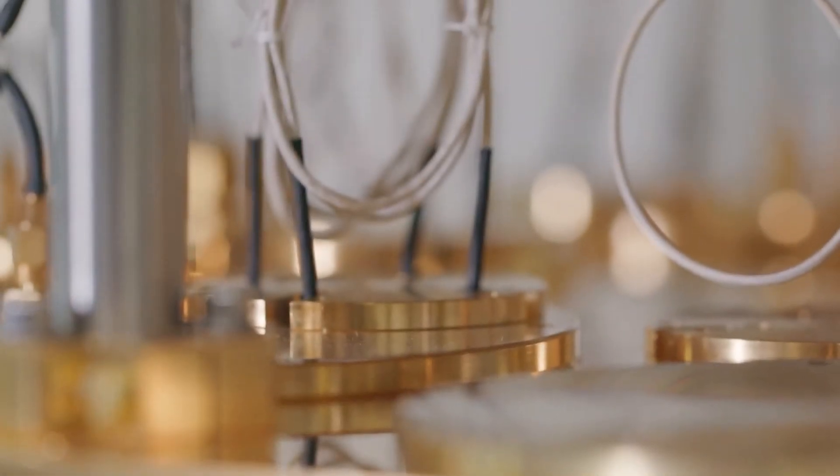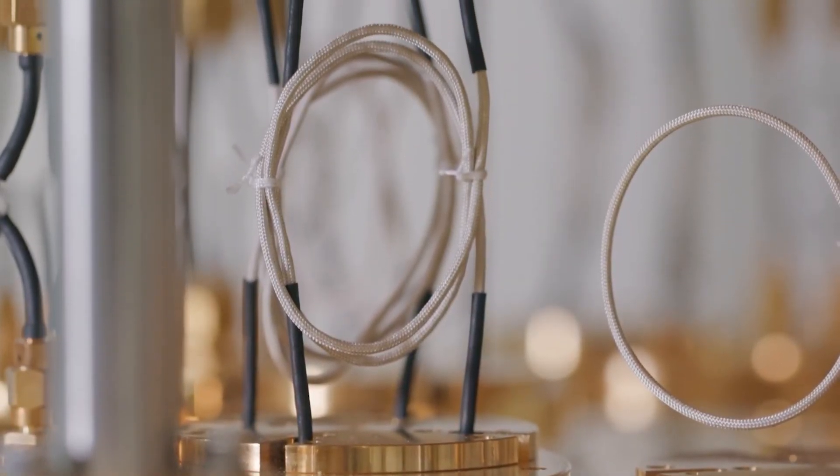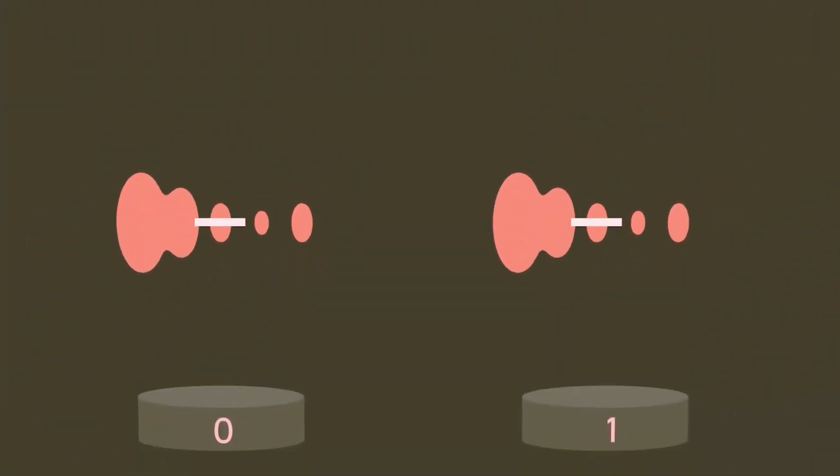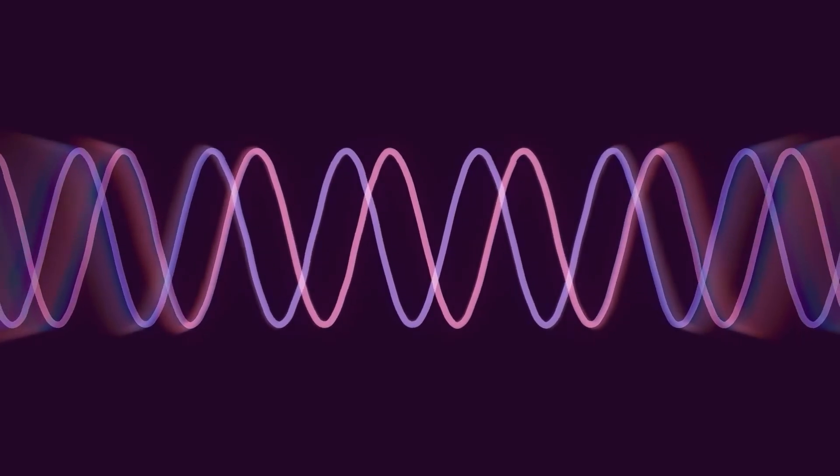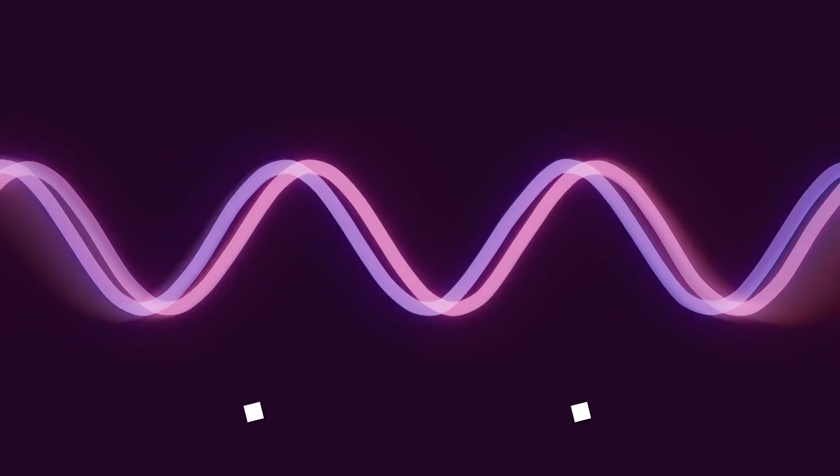Interference. To extract meaningful information from a quantum computer, it is necessary to perform measurements on the qubits. However, this action causes the system to collapse, resembling a typical computer system, posing a challenge. To address this issue, a technique known as interference comes into play.